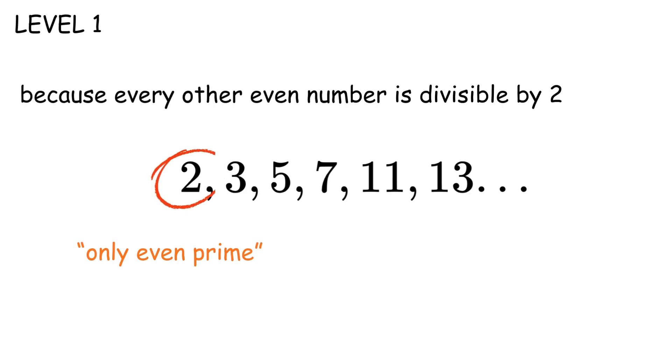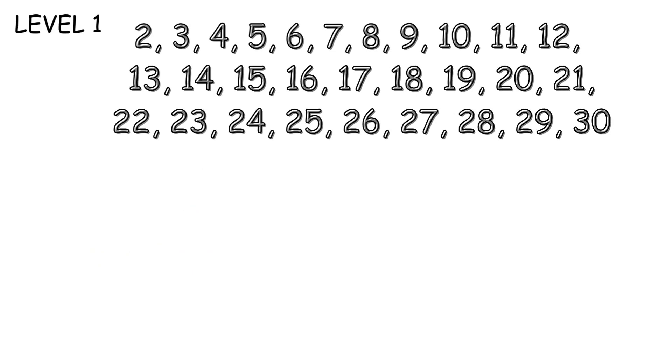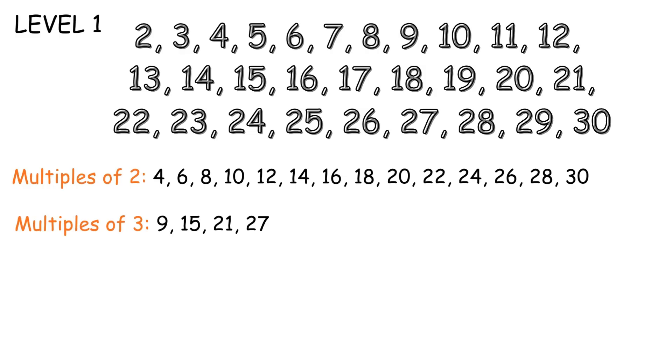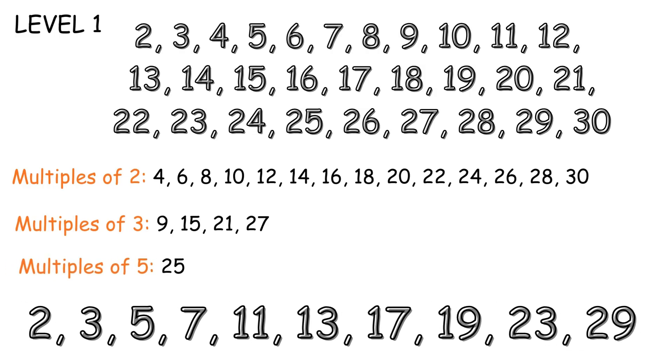Notice 2 is the only even prime because every other even number is divisible by 2. Now to find primes, you write out all the numbers, cross out multiples of 2, then multiples of 3, then multiples of 5, and whatever's left, those are your primes.